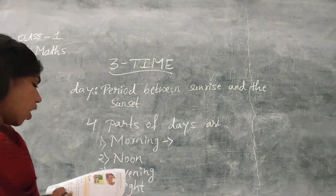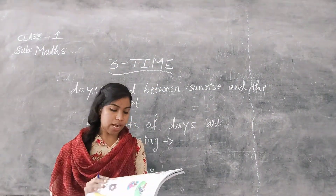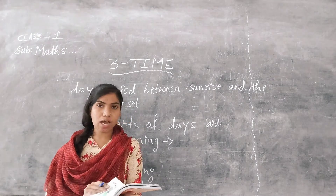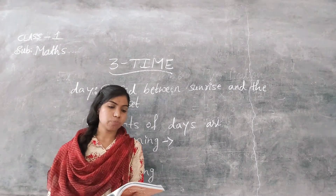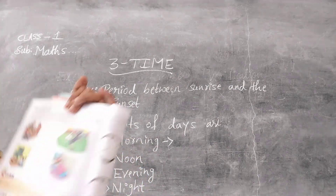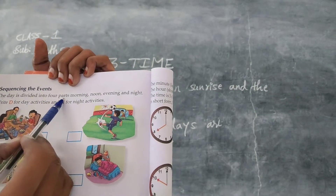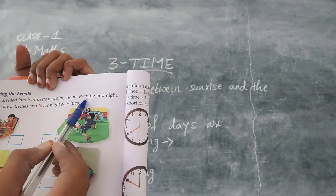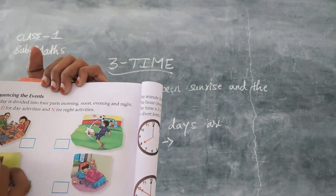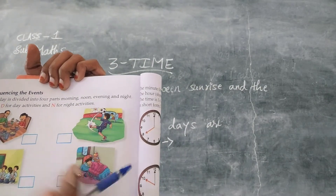Now turn your page to page number 194 — sequencing the events. The day is divided into four parts: morning, noon, evening, and night. Write D for day activities and N for night activities.